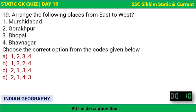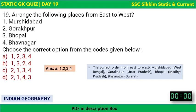Next question: Arrange the following places from east to west — Murshidabad, Gorakhpur, Bhopal, and Bhavnagar. The correct answer is 1-2-3-4, the same sequence as listed. Murshidabad is in West Bengal (farthest east), Gorakhpur is in Uttar Pradesh, Bhopal is in Madhya Pradesh, and Bhavnagar is in Gujarat (farthest west).